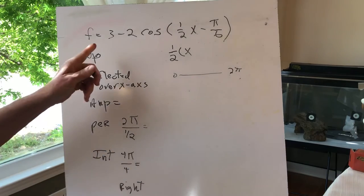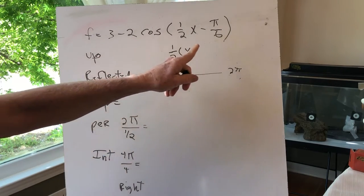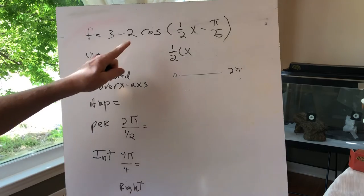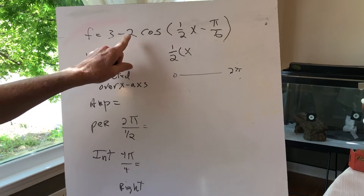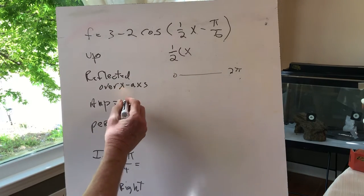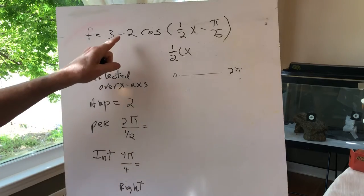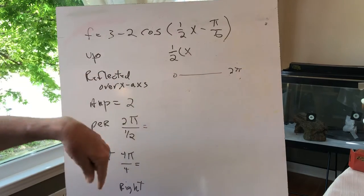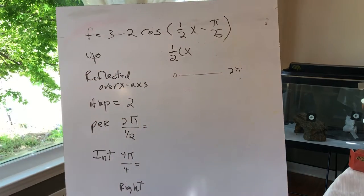The function is 3 - 2cos(1/2x - π/6). We start with the amplitude, which is 2. The negative sign means it's been reflected over the x-axis, so it'll be upside down. Instead of starting up here, we're going to start down here, and it's been shifted up three.